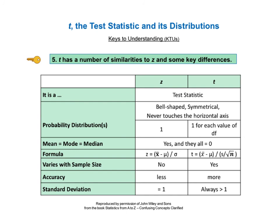KTU number 5 states that the test statistics, t and z, have a number of similarities and differences. These are illustrated in this compare and contrast table. First, they are both test statistics. Secondly, their probability distributions are similarly bell-shaped and symmetrical, and they never touch the horizontal axis.